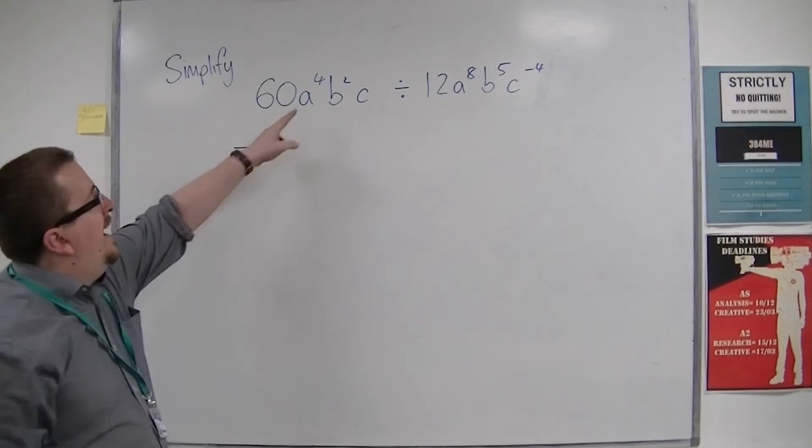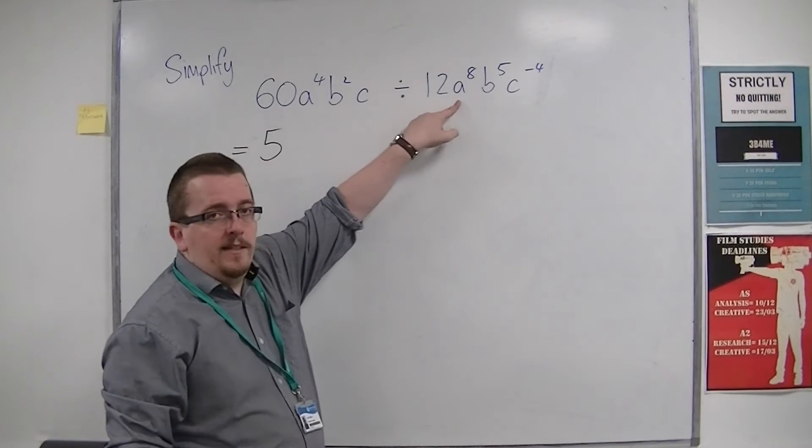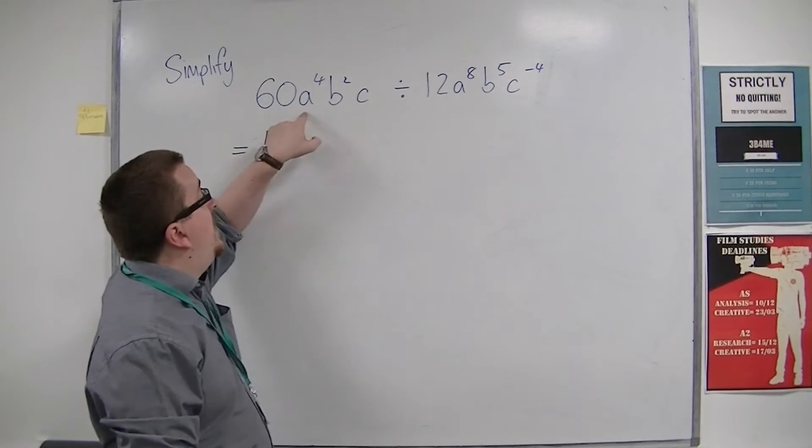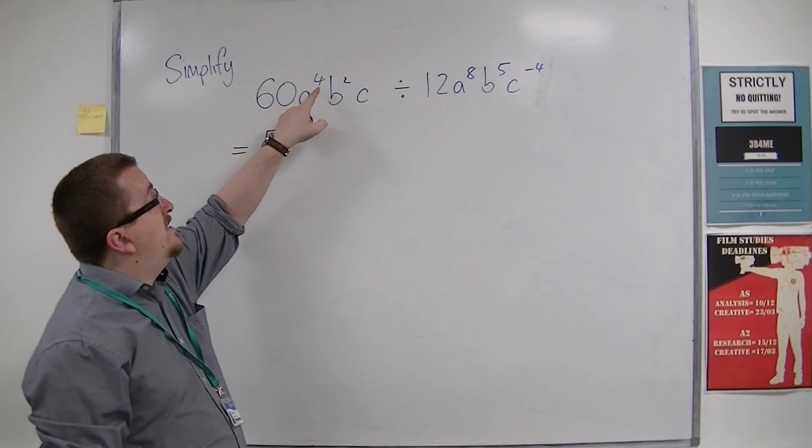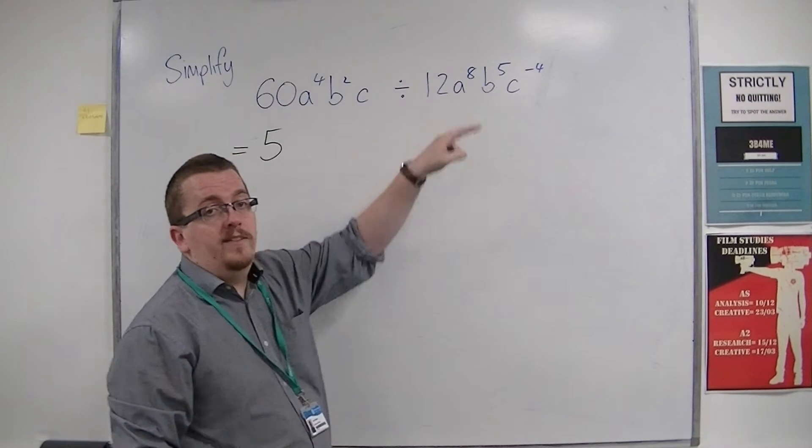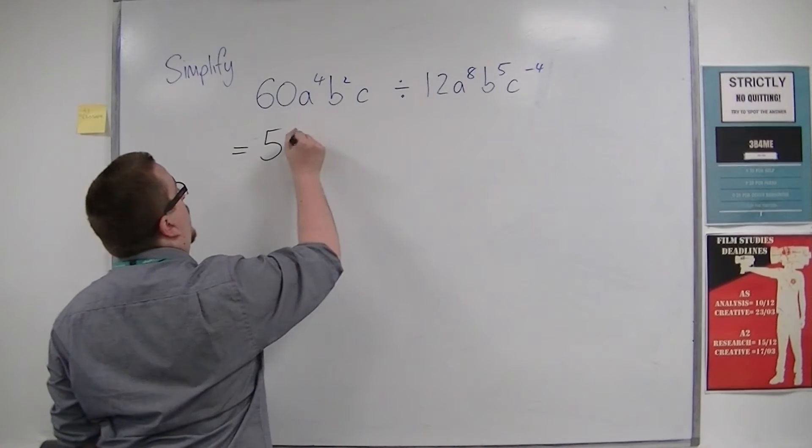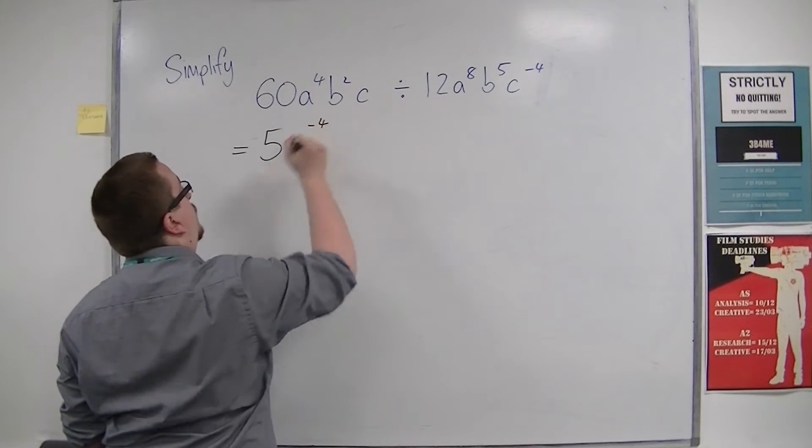60 divided by 12 is 5. Then we've got a to the 4 divided by a to the 8. The base numbers are the same, the a's, so we need to subtract the indices: 4 take away 8, which would be minus 4. So a to the power of minus 4.